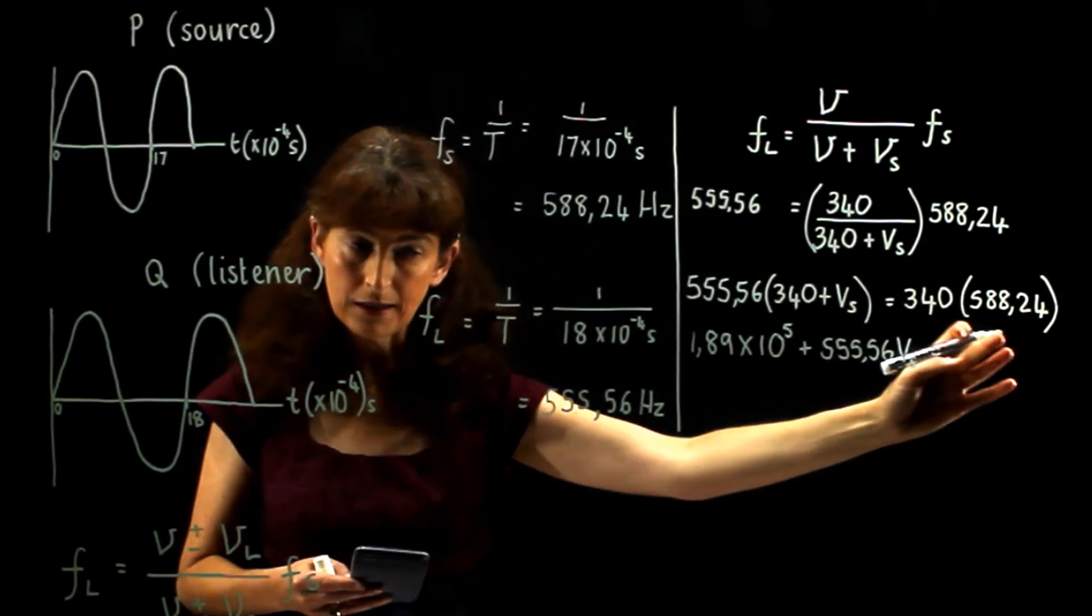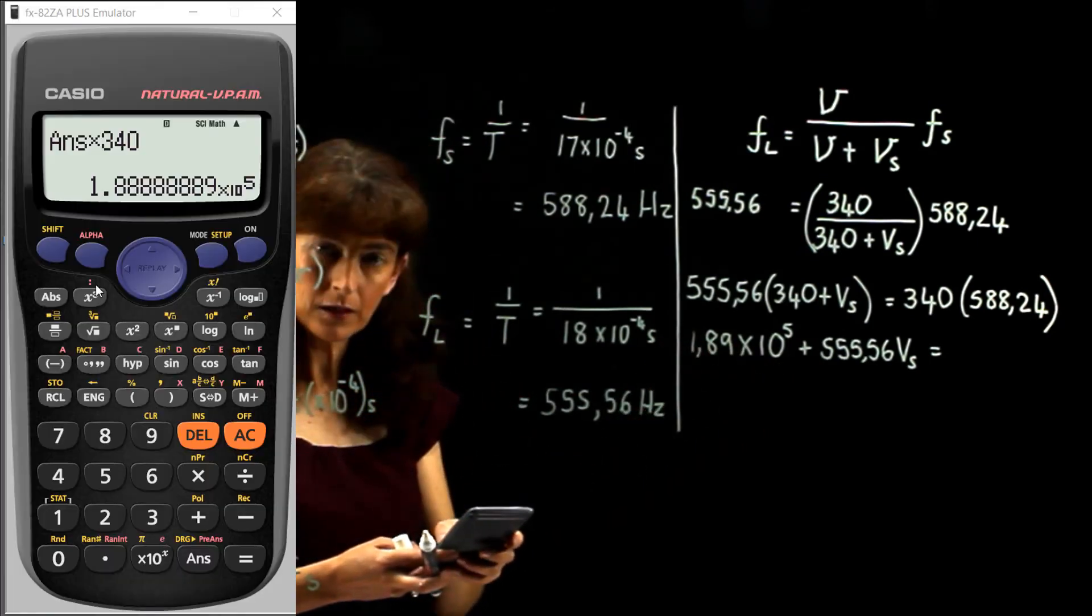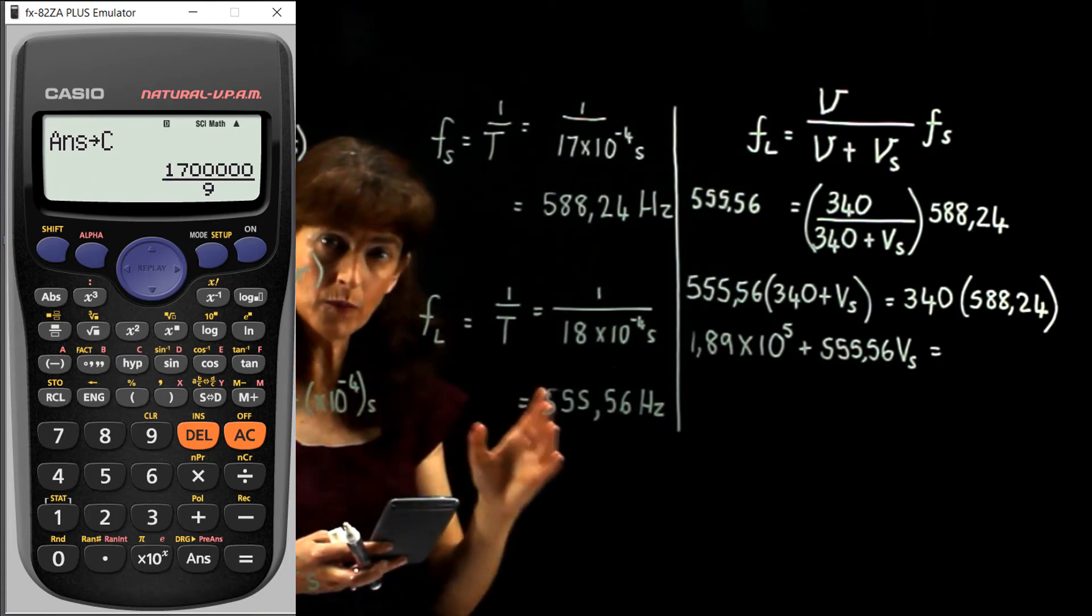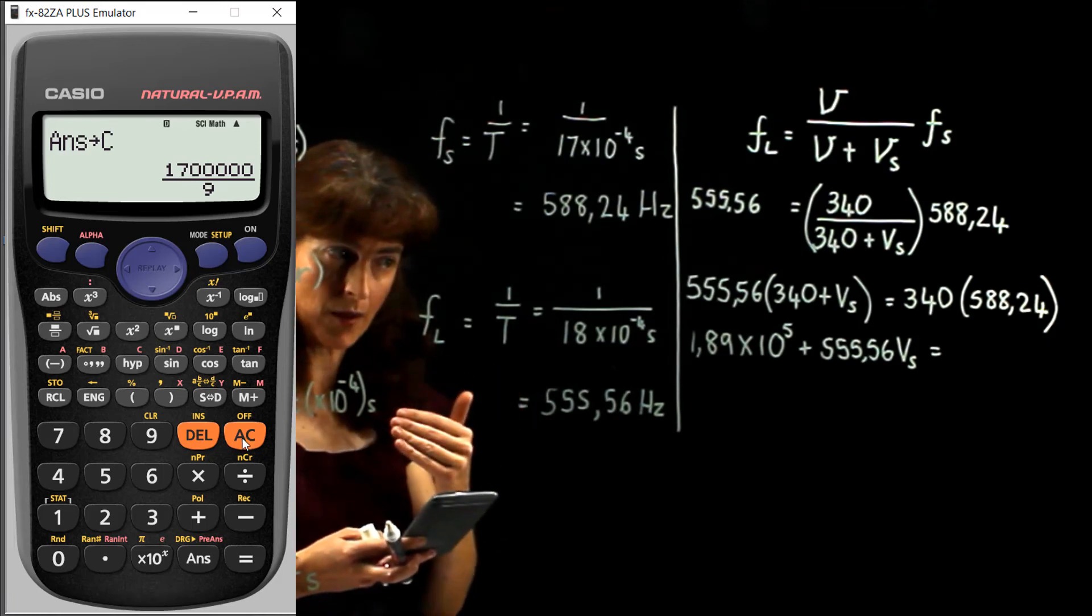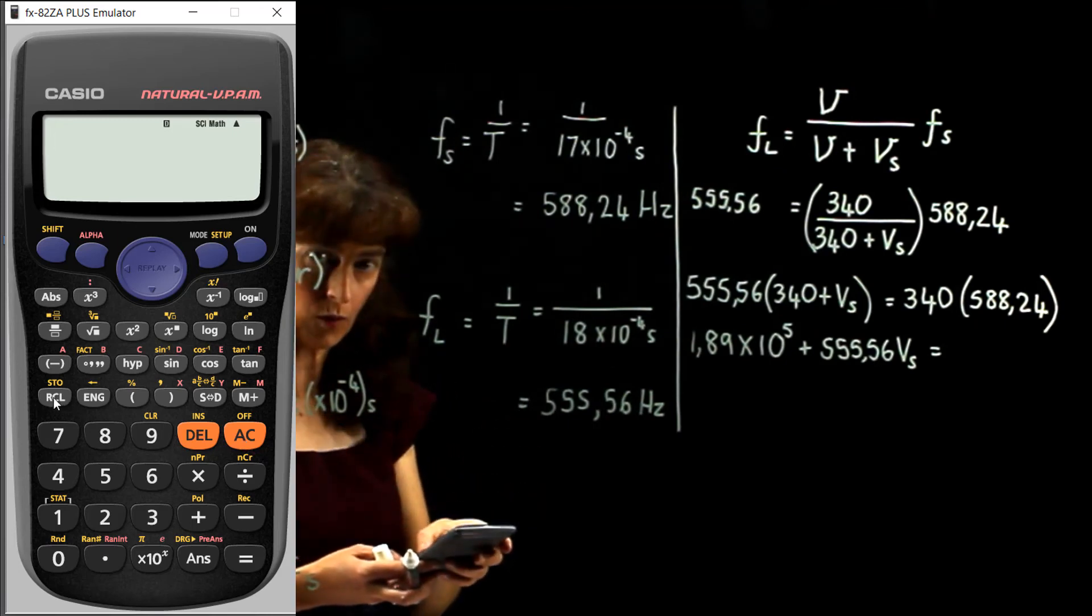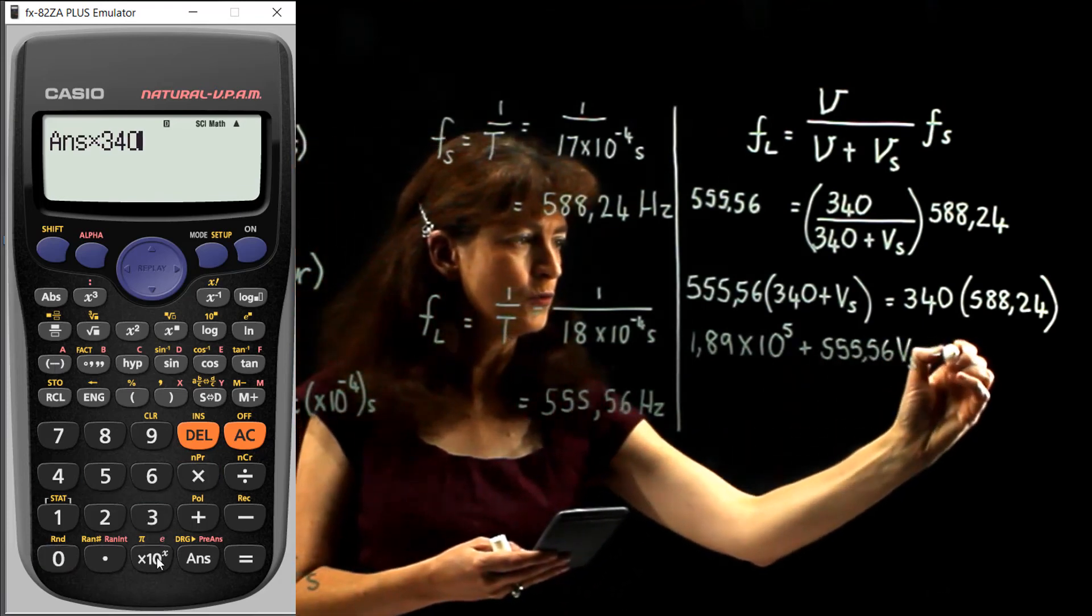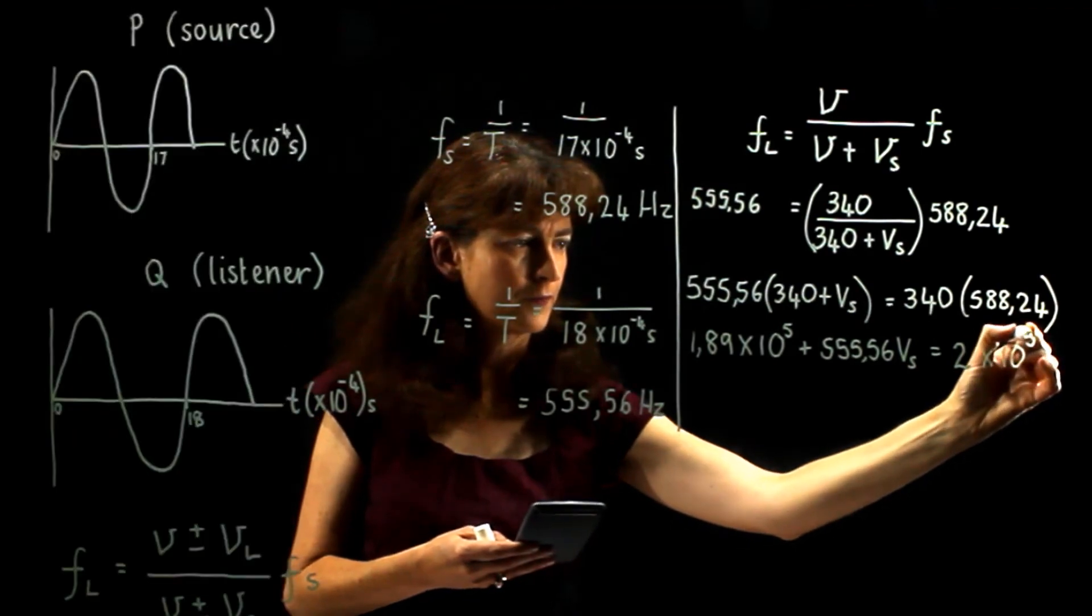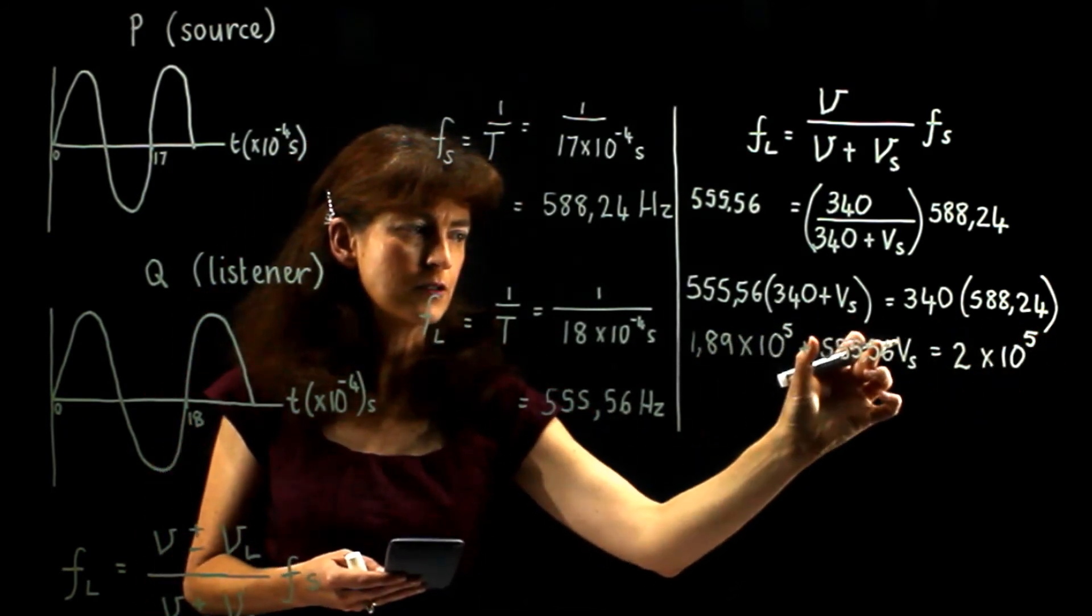We're going to need to calculate this but we don't want to clear away what we've just calculated there, so let's store that shift recall to make it store C. Now we need to clear but we mustn't clear the memory away as well, so don't press the on button to clear everything, just press the AC button that retains the memory. Then we want to recall the value that we had stored in A, so we press recall A and we multiply that by 340 and we get 2.00 times 10 to the power 5.